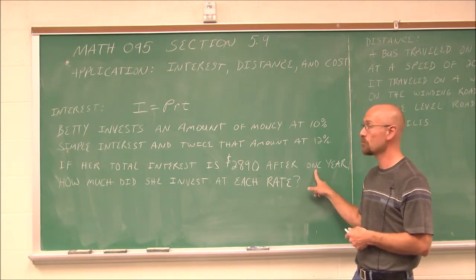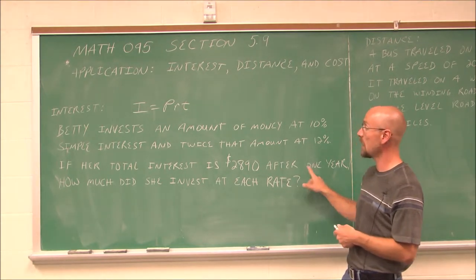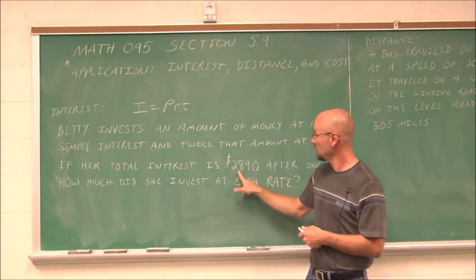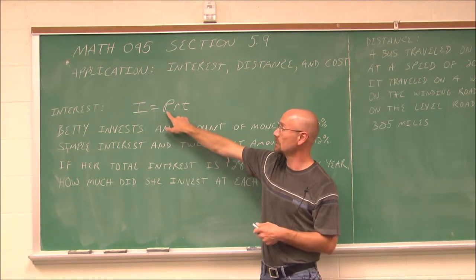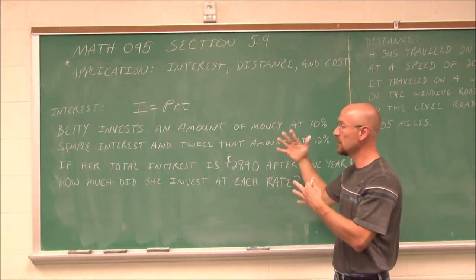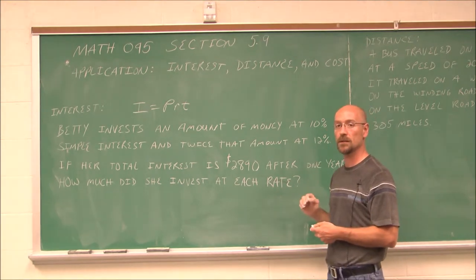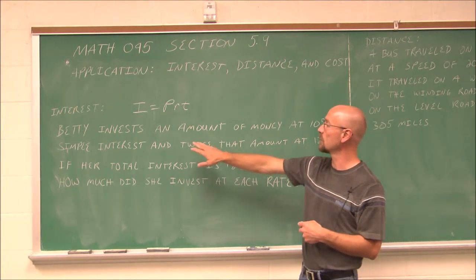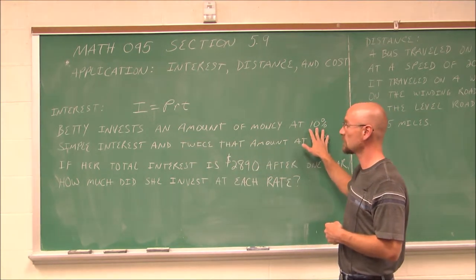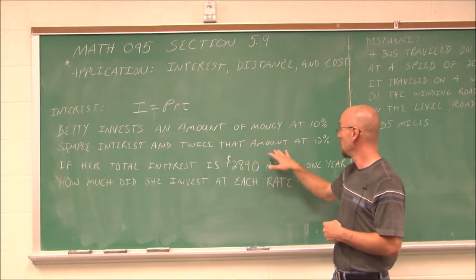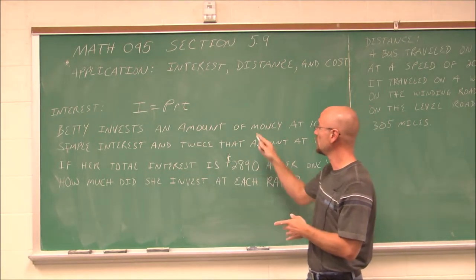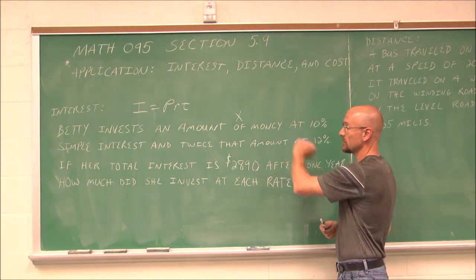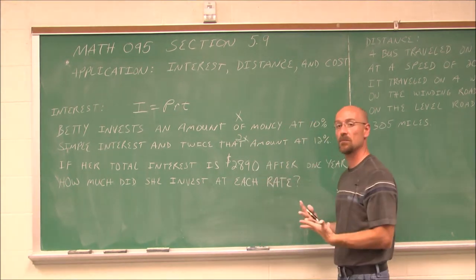I'm told something about time, something about rates, something about interest — but not about principal. So my variable here is principal. Reading it again: Betty invests an amount of money at 10% — let's call that x. And twice that amount at 12% — so that's 2x. I've assigned my variable.